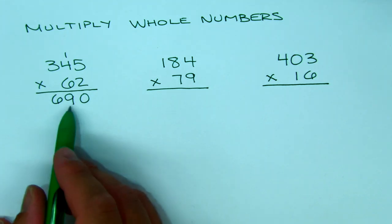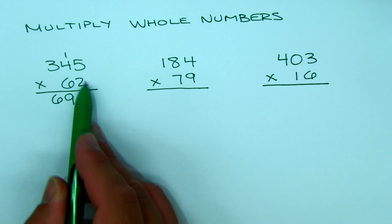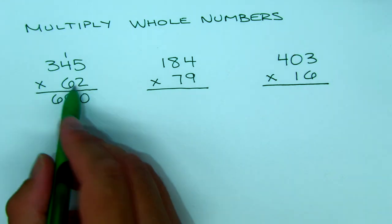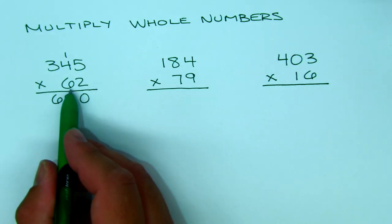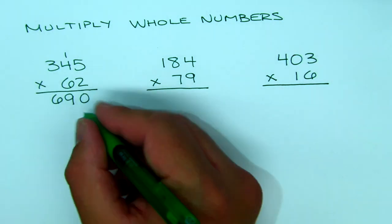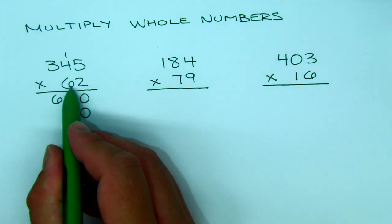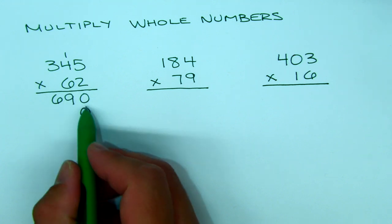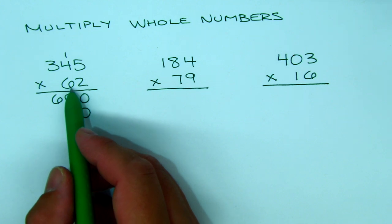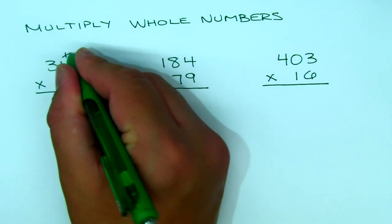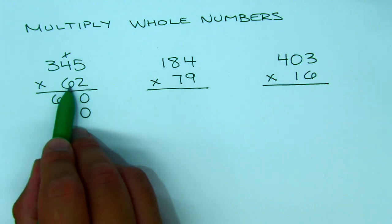So our first partial product is 690 — meaning 345 times 2 is 690. But it's 62, so now we need to multiply 345 times 60. Because this is a 60 and not just a 6, we're going to put a 0 down as a placeholder. That 0 gives it the power of 10 — in this case, 60. We get rid of the carried 1 since we've already used it, and now we're ready to work with the 6.